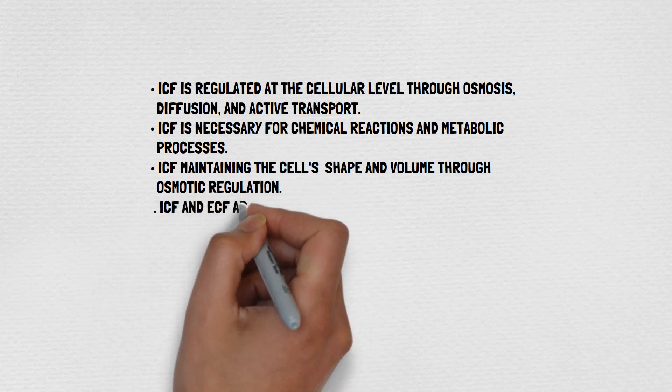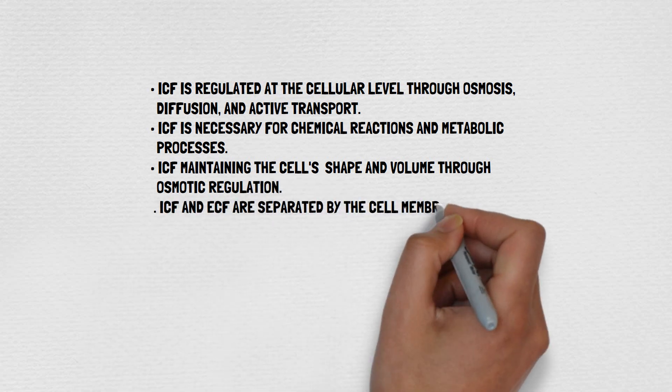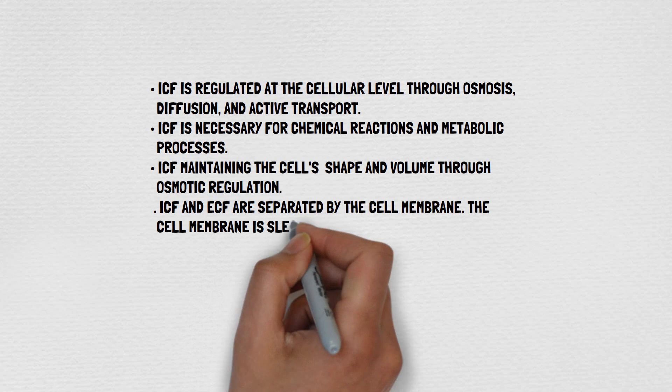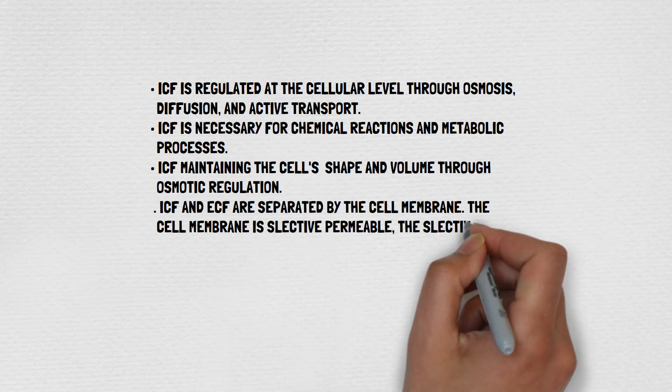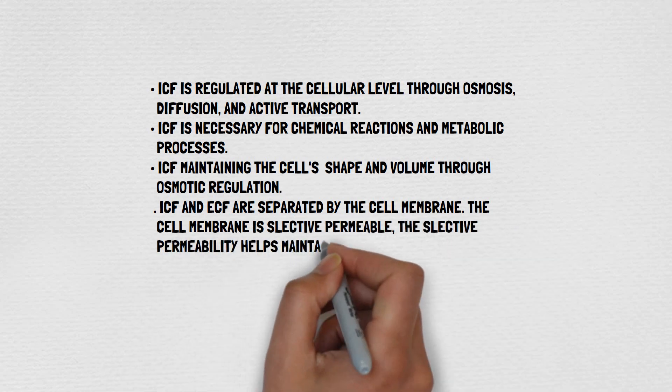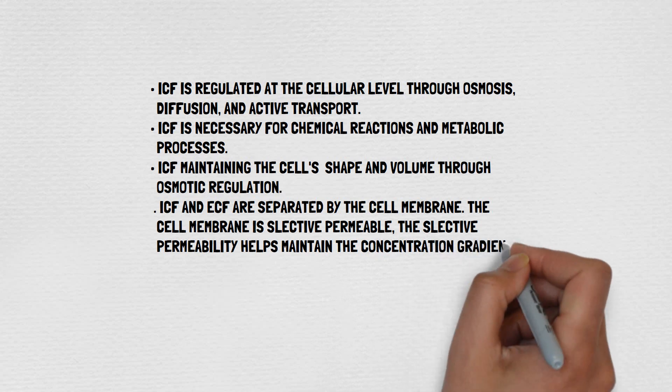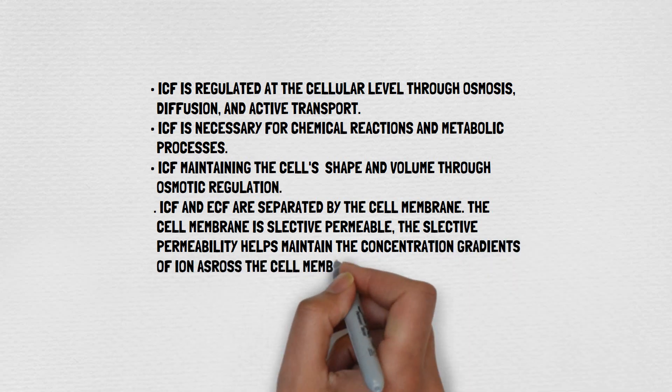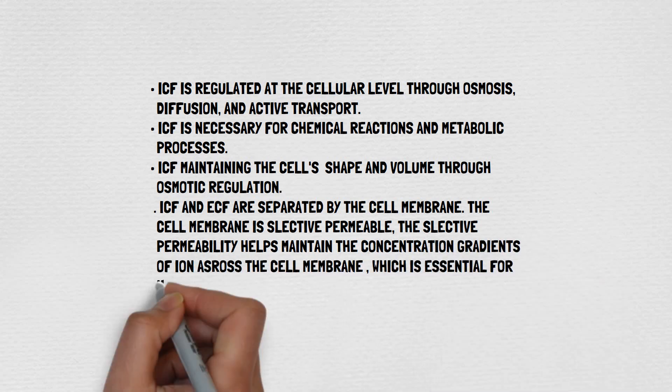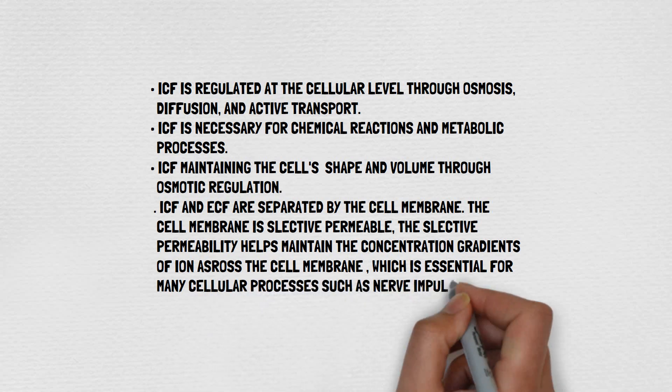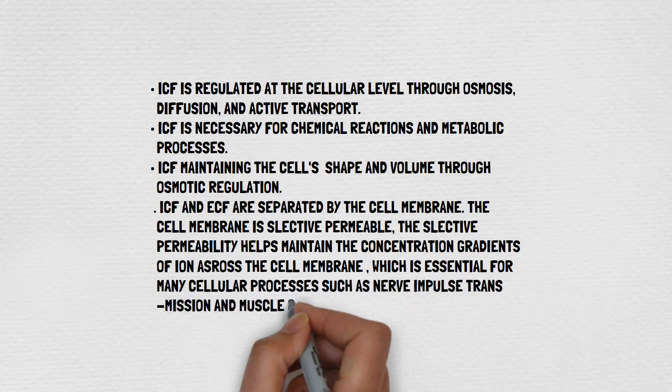ICF and ECF are separated by the cell membrane. The cell membrane is selectively permeable. The selective permeability helps maintain the concentration gradients of ions across the cell membrane, which is essential for many cellular processes, such as nerve impulse transmission and muscle contraction.